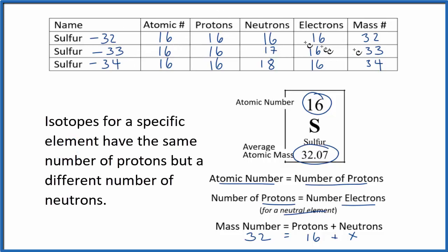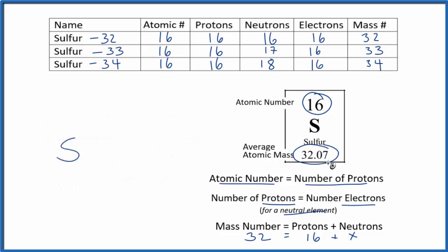So those are the major isotopes. If you took an average of these based on their abundance, how much there was of each, you get 32.07. So this is the average based on abundance. But we could also write notation for the specific isotopes, and this is called nuclear notation. So for sulfur-32, we write the mass number, sulfur-32, and it has 16 protons. For sulfur-33, we write sulfur-33. It also has 16 protons because it's sulfur. And then sulfur-34, that has sulfur-34 has 16 protons. So these are very specific for each type of isotope, where this is an average of all of these isotopes based on their abundance.